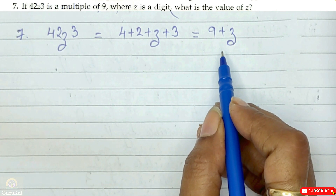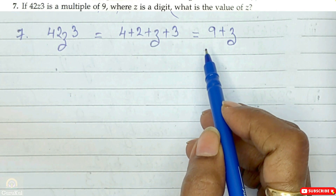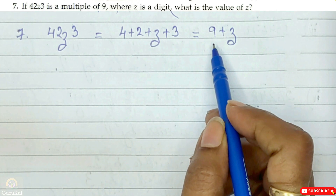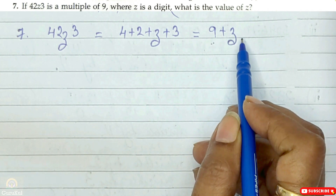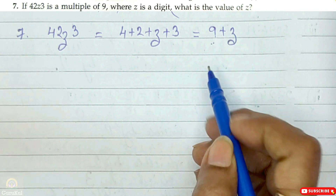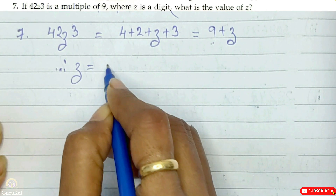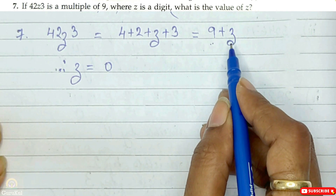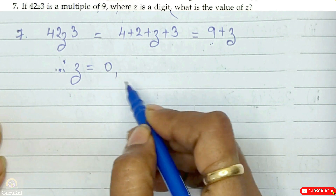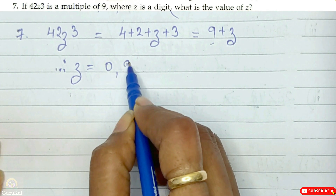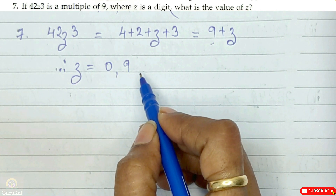What is the divisibility test for 9? We need to find the sum of the digits of the given number. We have 9 plus Z. Now, 9 is already divisible by 9, so Z can be 0. 9 plus 0 gives us 9, which is divisible by 9. Next, 9 plus 9 gives us 18, which is again divisible by 9.